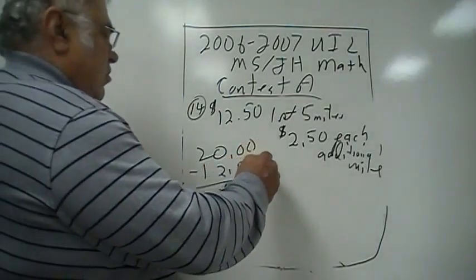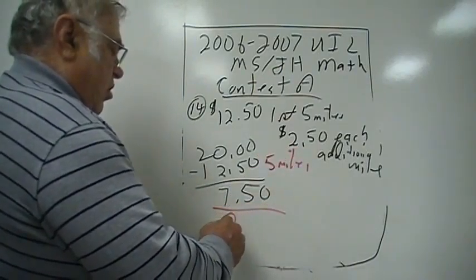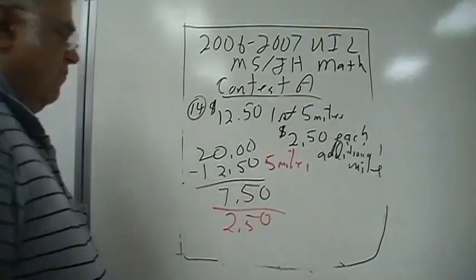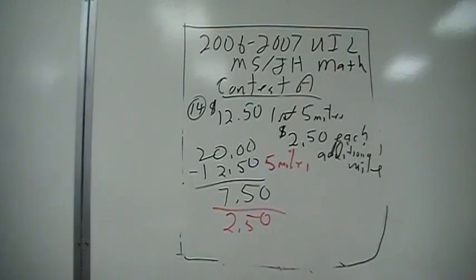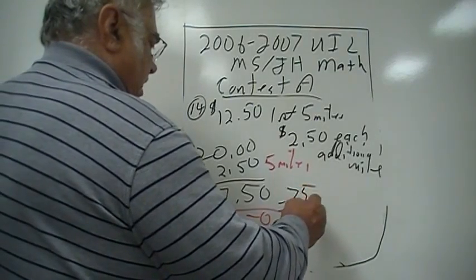This took us 5 miles and now I need to see how many $2.50 there are in $7.50. And since that's both, you move them one place over, this is the same as $75 divided by $25 which is 3.